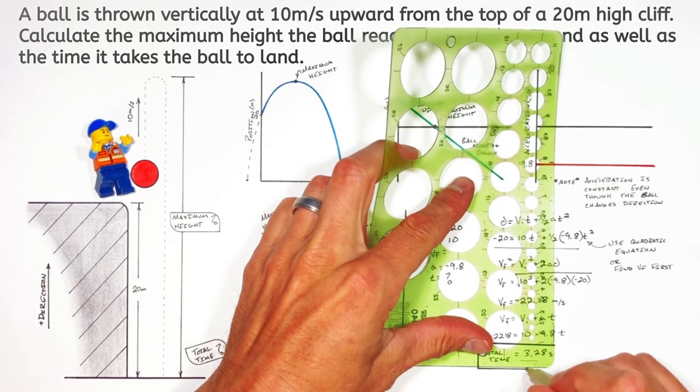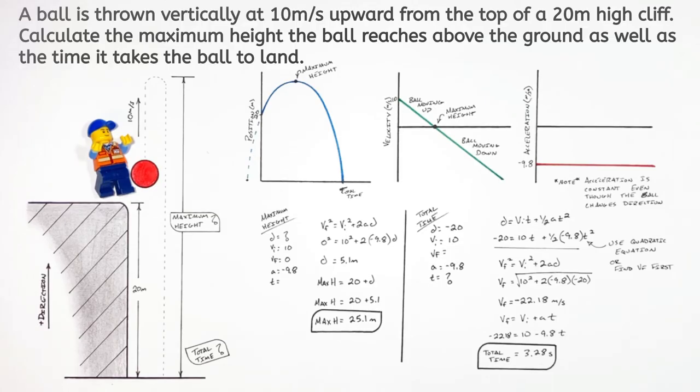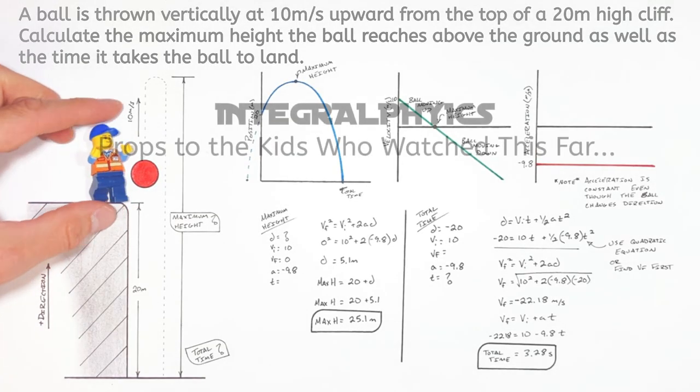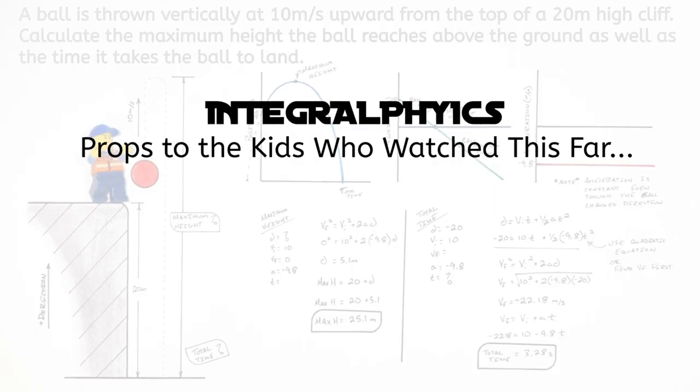So this has been how to graph the motion of an object thrown upward off a cliff, as well as find the maximum height and total airtime. I hope you found this useful. And on that note, that's all for now.